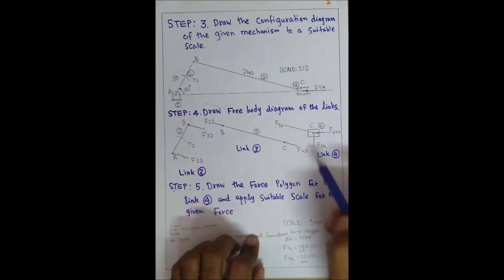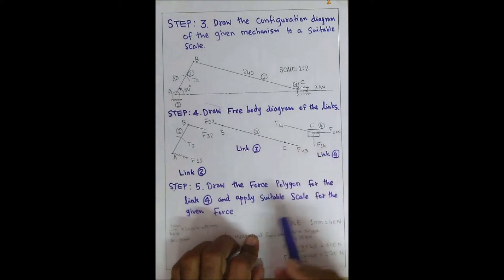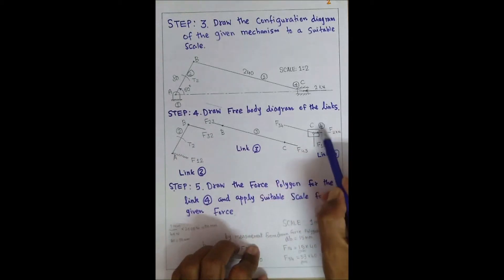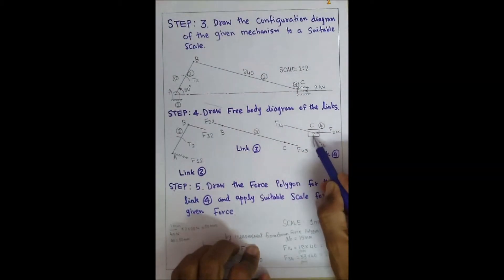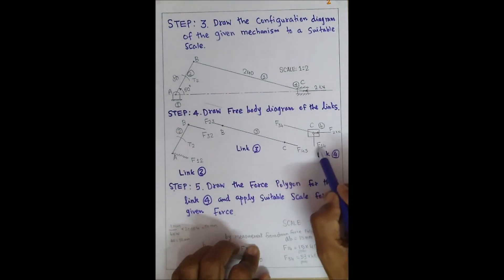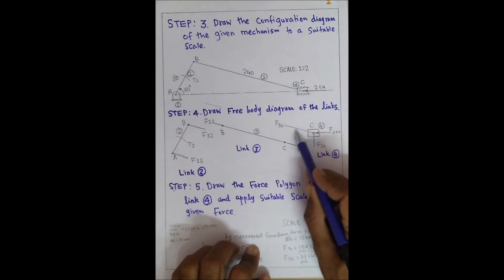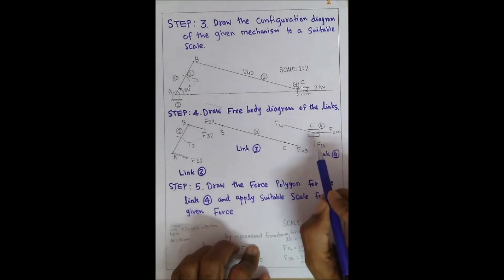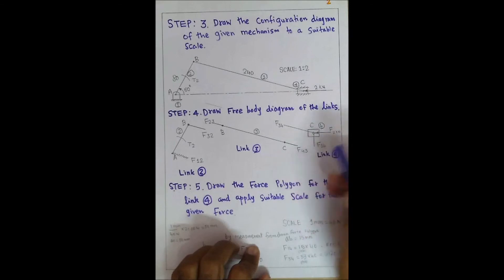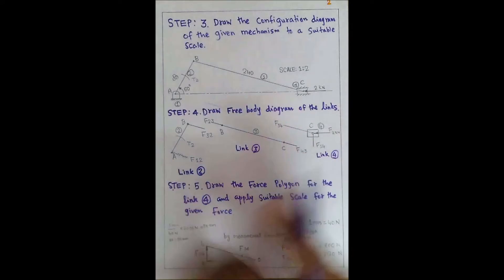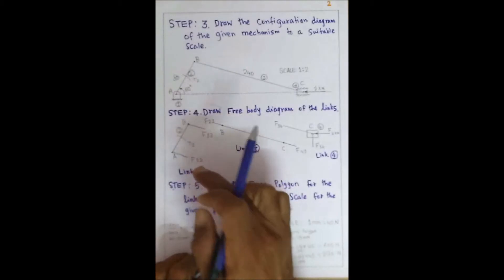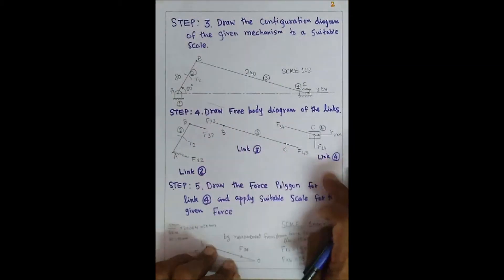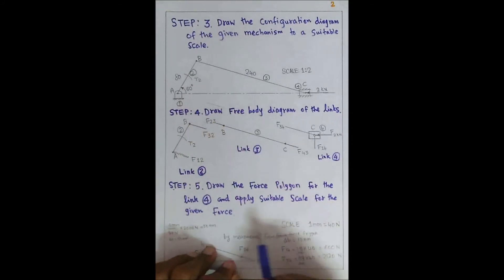For the piston (link 4), the forces acting are: 2 kN horizontal force, force F34 from link 3, and reaction force F14 from link 1. This is the free body diagram of link 4. So this completes the free body diagrams of links 2, 3, and 4.